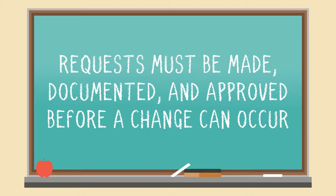That type of paper trail is very important, especially after a data breach or some other type of security incident. When you're going back through in some type of forensics effort and you're trying to understand when, how, and why something happened, you'll be able to identify in your change control process when certain things were either approved or denied in terms of software being installed on these systems.